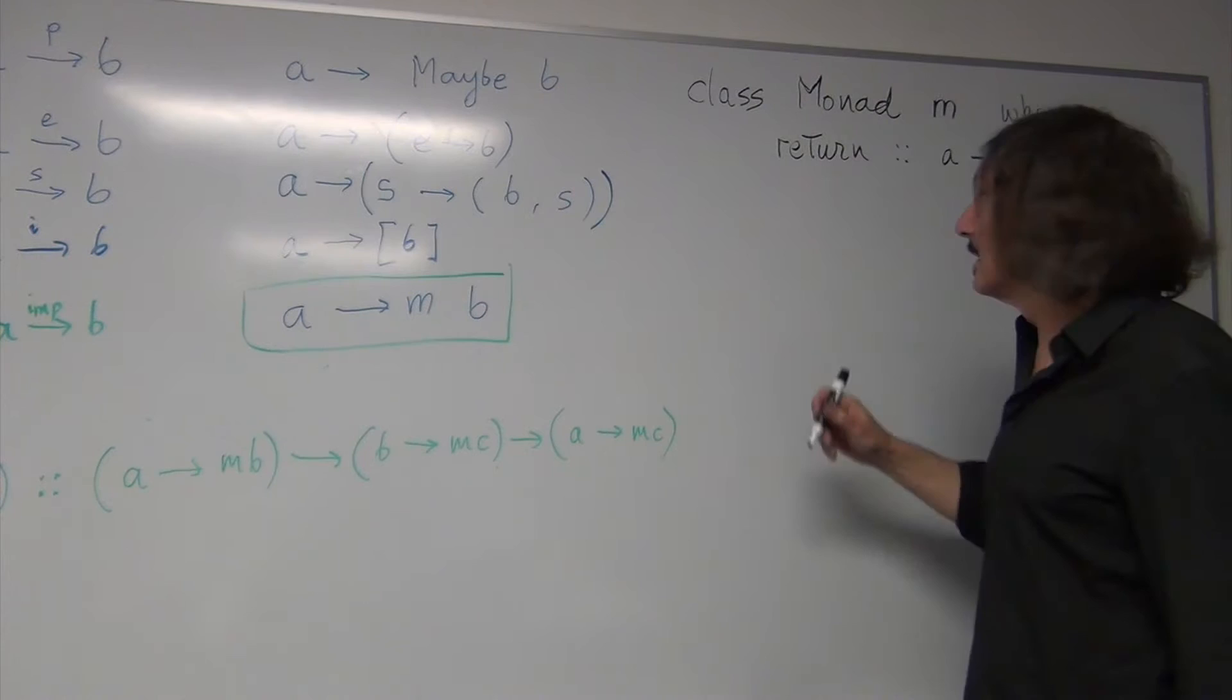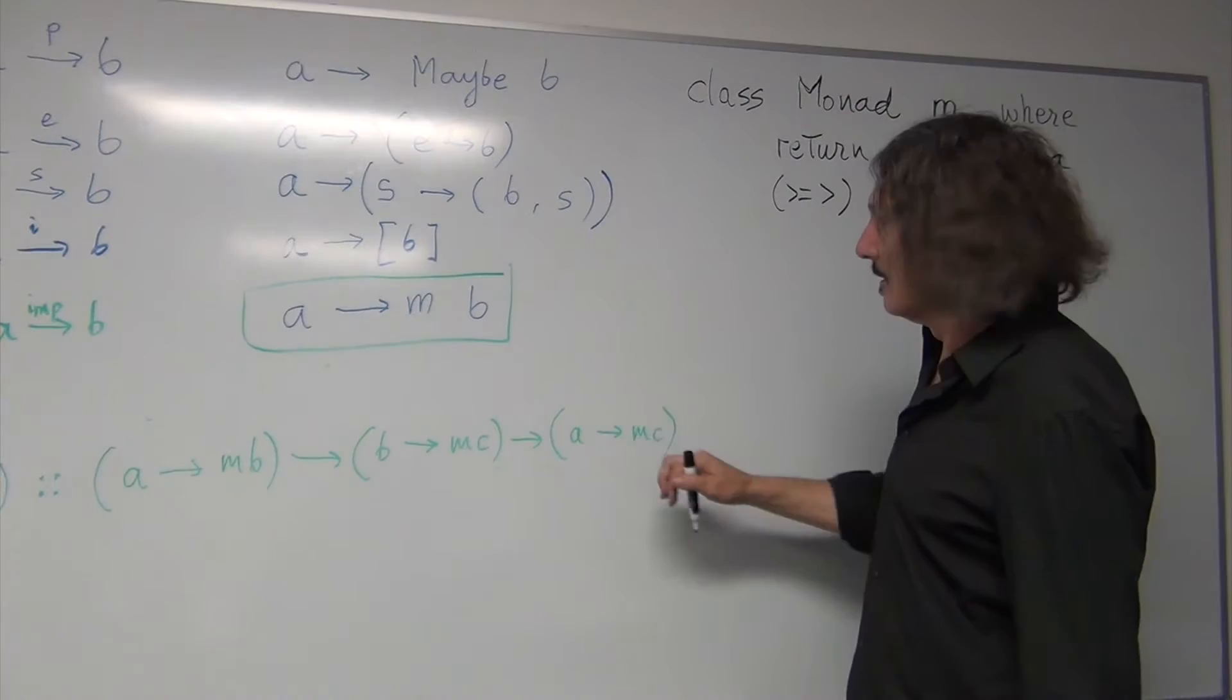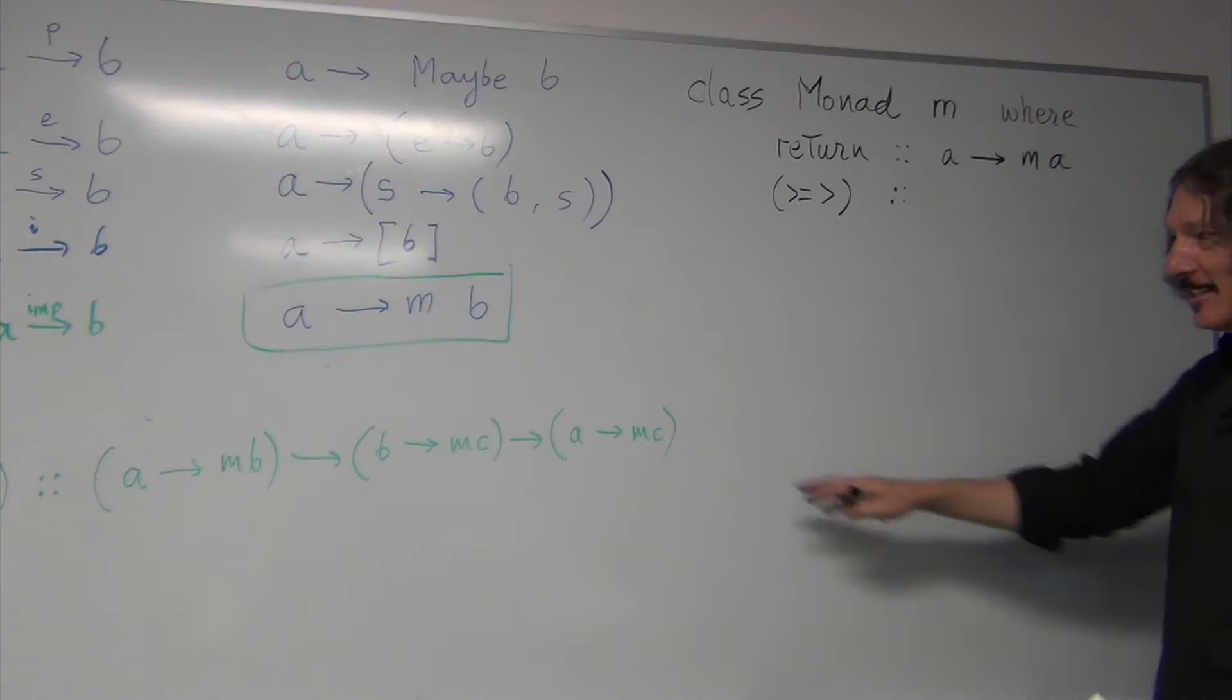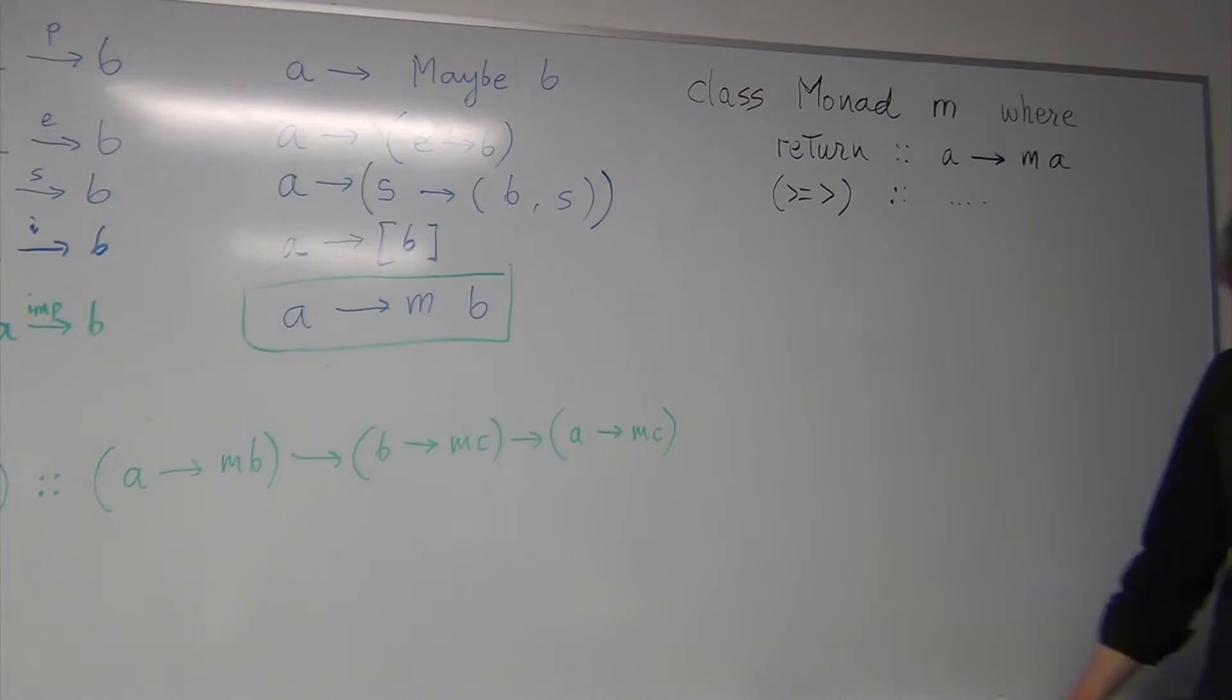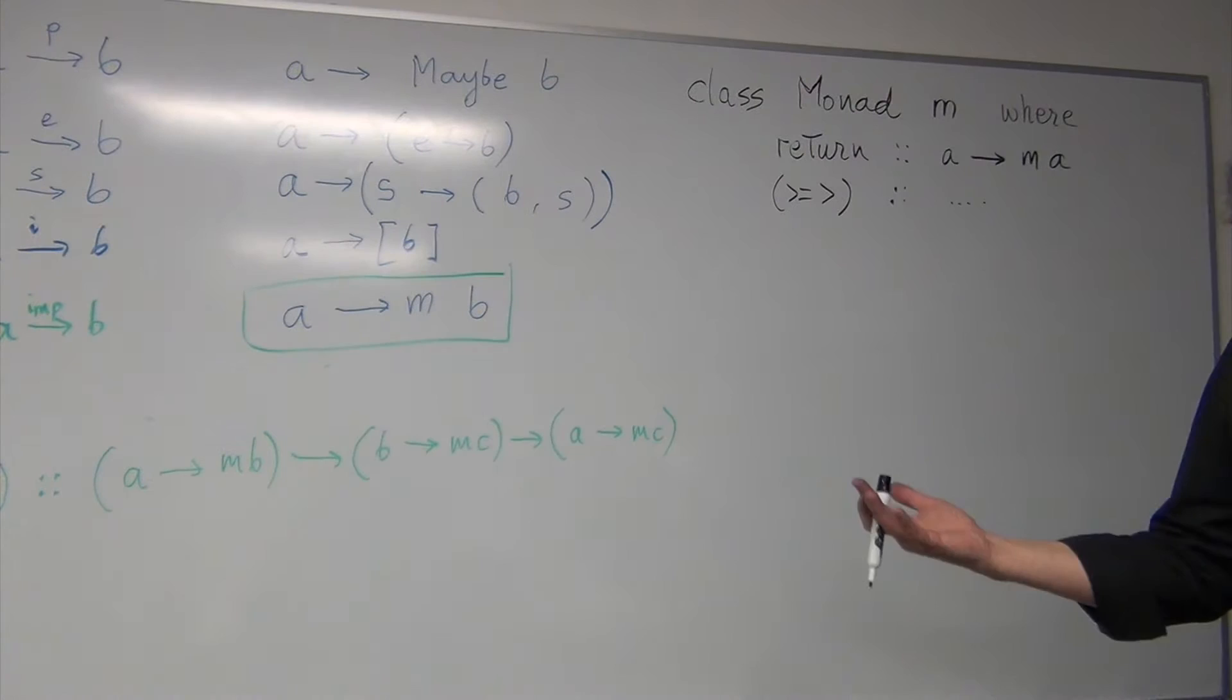And it has to support the fish operator, whose signature is this. Plus, these three additional properties, axioms of Monad, that make it essentially a monoid.